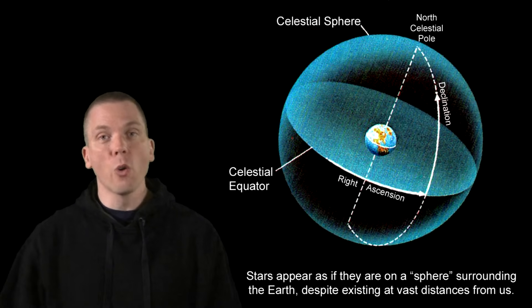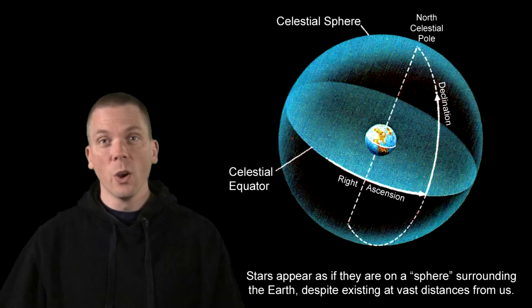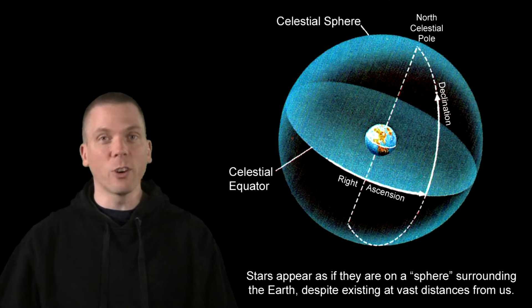These are called Right Ascension and Declination. Right Ascension is actually easy to remember. If you face north and the sun rises in the east, which side of your body is that on? Well, it's on the right side. So the sun ascends from your right, or Right Ascension.